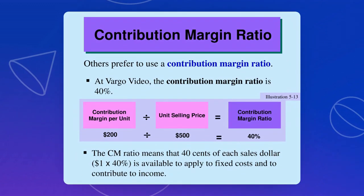In terms of percentage, how do we compute it? 100% is always your sales. The variable cost depends on the amount — just divide it by the selling price or sales. For the CM, 200 divided by 500 gives a CM of 40%. So for sure, 60% is your variable cost.